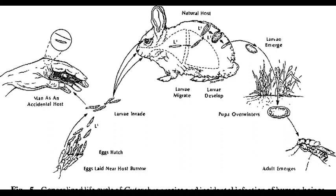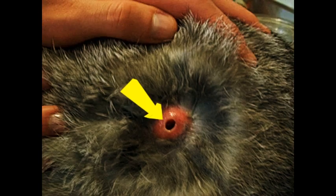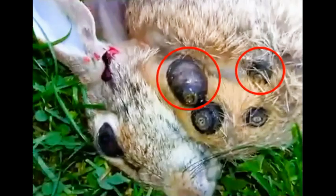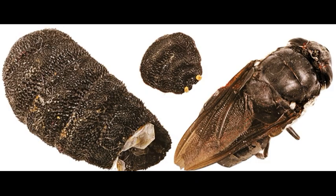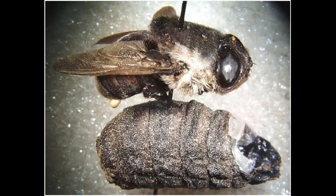The larvae burrow under the rabbit's skin, then feed on its flesh, which results in large painful cysts with a fistula at the skin surface that can become infected by secondary bacterial infection and can be fatal. After infection, the larvae form a protective pupal case around the body called the puparium. Then, a few days later, an adult bot fly emerges from its puparium. This completes the whole life cycle of the bot fly.